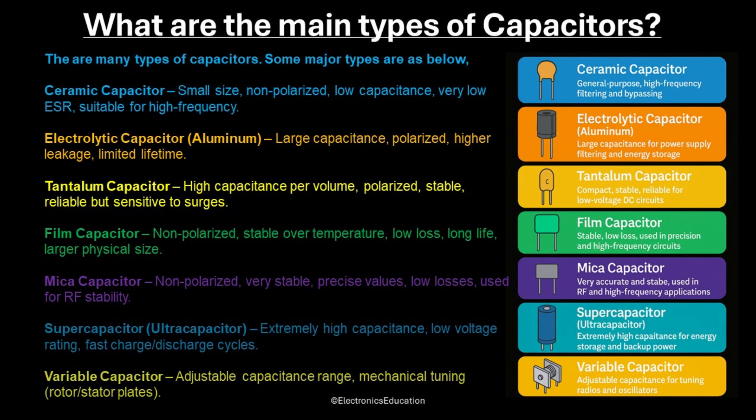Now what are the types of capacitors? There are many types and categories of capacitors. Some major types are mentioned here. First, ceramic capacitors — these are small in size, non-polarized, and suitable for high-frequency circuits. Second, electrolytic capacitors or aluminum capacitors — these have large capacitance and are polarized. Third, tantalum capacitors — these have high capacitance per volume, are stable and reliable, but sensitive to surges.